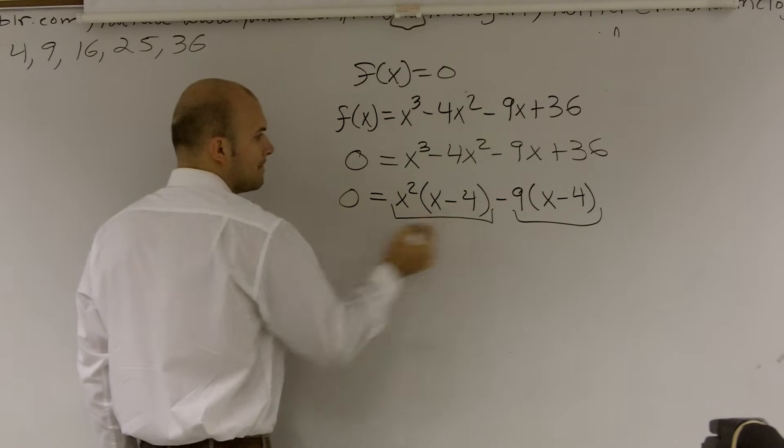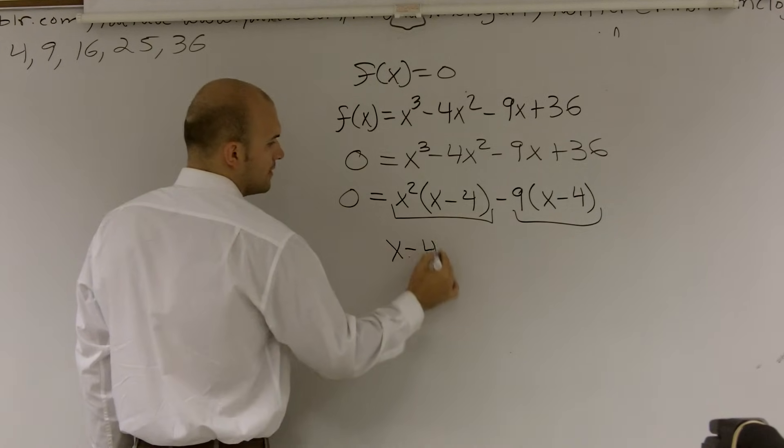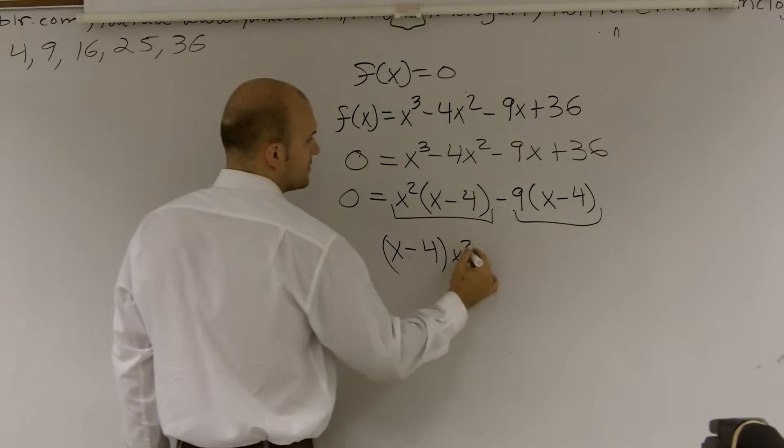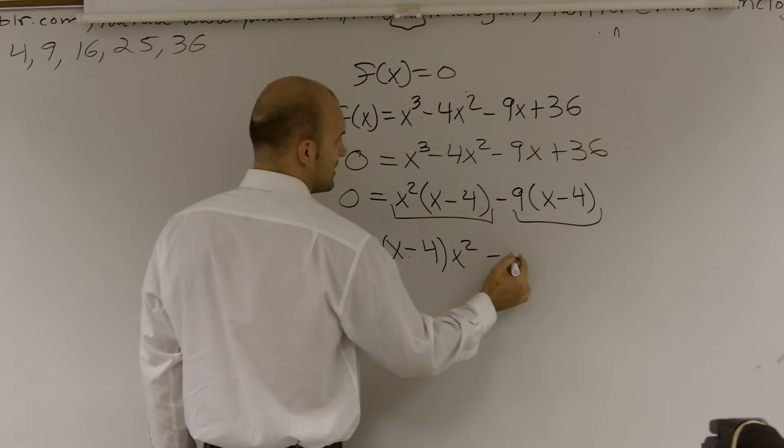So what I'm going to do is I'm going to factor both of those out. So if I factor out an x minus 4, I pull it out, I am left with an x squared. And if here I factor out an x minus 4, I'm left with a negative 9.